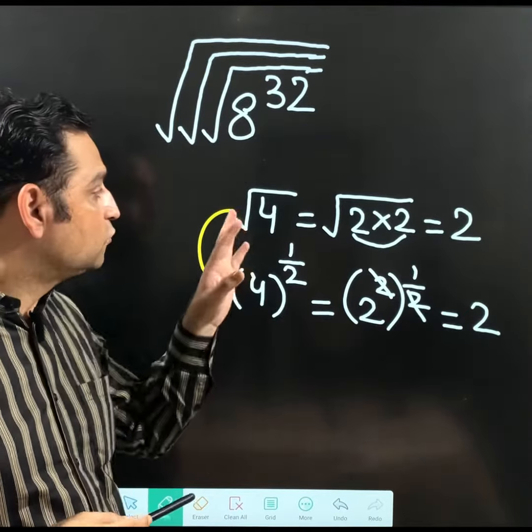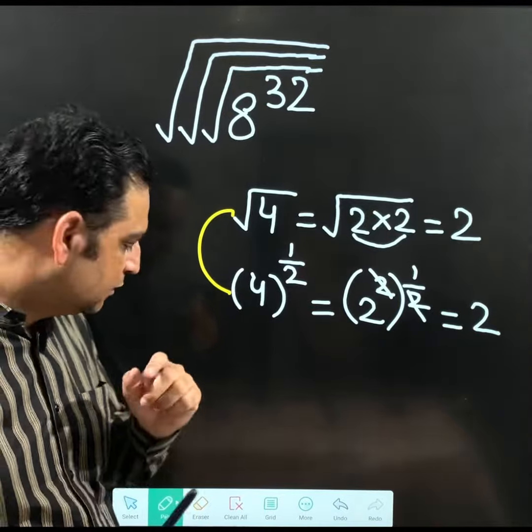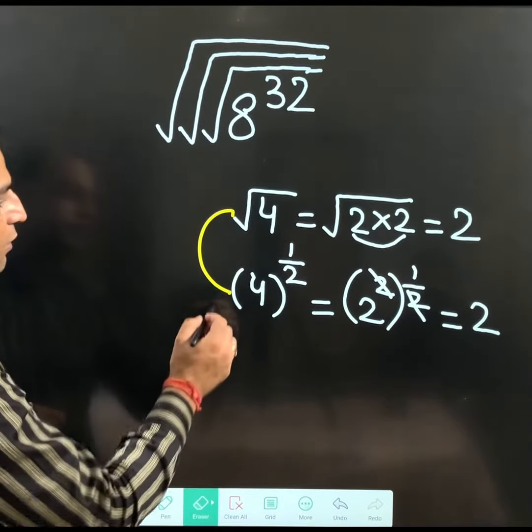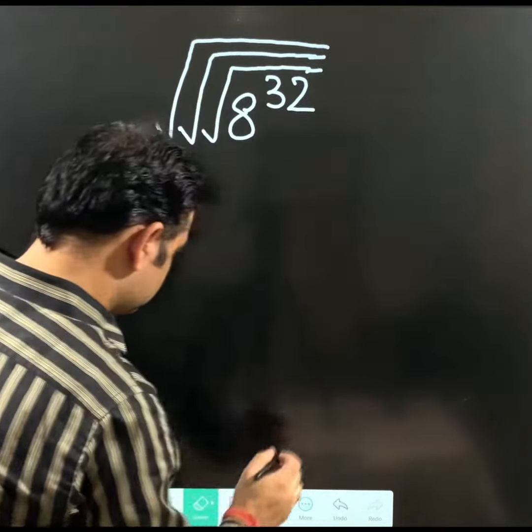So do remember now, square root of 4 can be written as power 1 by 2. Exponent 1 by 2. Now, if we are clear with this concept, then you will see it is very easy to do discussion.